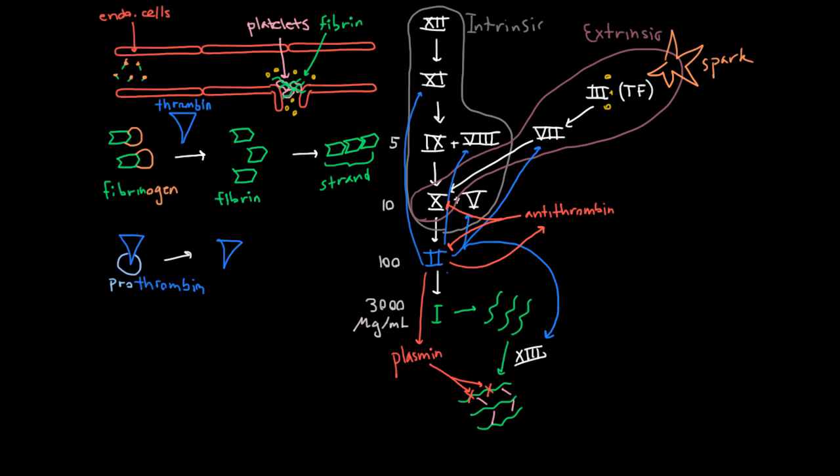So what if this whole system didn't work? I don't mean the negative feedback, but I mean the whole clotting system. Well, if it didn't work, then you wouldn't form a stable plug here, and you would get lots of blood pouring out of your damaged endothelium. And so what we call that is hemophilia. Hemo refers to blood, and philia means love. So people who have hemophilia love to bleed.